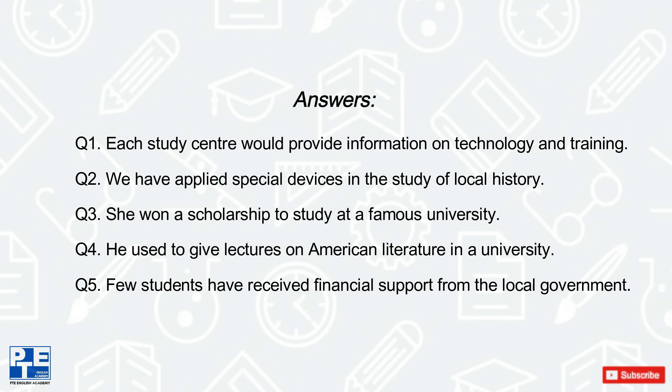Answers: Question number one, each study center would provide information on technology and training. Question number two, we have applied special devices in the study of local history. Question number three, she won a scholarship to study at a famous university. Question number four, he used to give lectures on American literature in a university. Question number five, few students have received financial support from the local government.